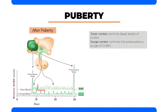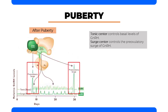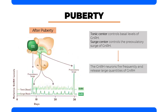After puberty, the tonic center controls basal levels of GNRH, which are higher than prepubertal levels because the pulse frequency increases. On the other hand, the surge center controls the preovulatory surge of GNRH. This surge occurs as sudden bursts of GNRH, where neurons fire frequently and release large quantities of GNRH in order to cause the LH surge. This is represented by a series of rapid and high amplitude pulses. Inability of the surge center to function results in ovulation failure.